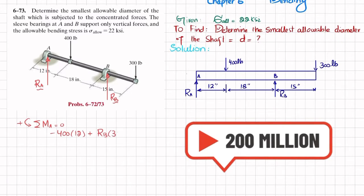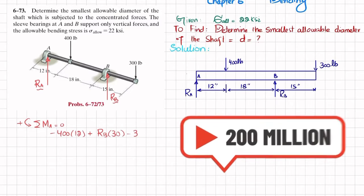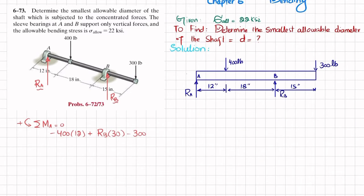Solving: minus 400×12 plus Rb×30 minus 300×45 equals zero gives Rb equal to 610 pounds.